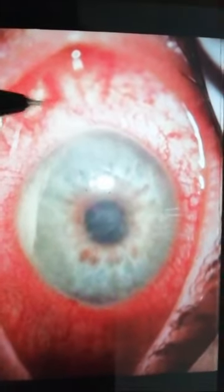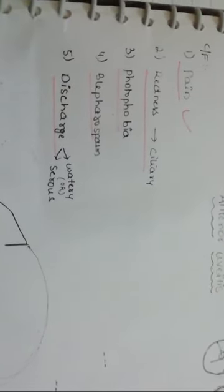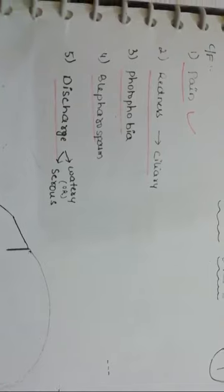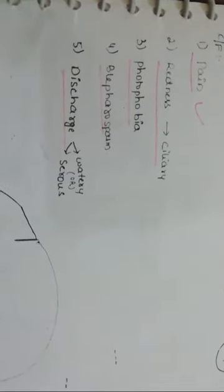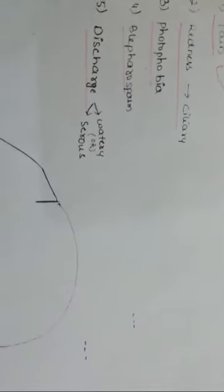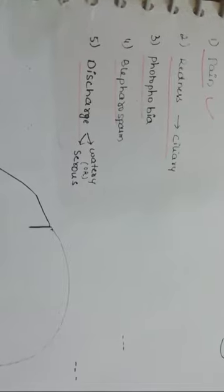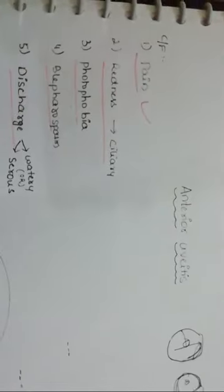This redness is around the cornea, which is the ciliary type of congestion. Patients have photophobia, meaning they cannot tolerate normal light. Blepharospasm is an involuntary tight closure of the eyelids. The discharge can be watery or serous — either type can occur. These are the basic clinical features of anterior uveitis.